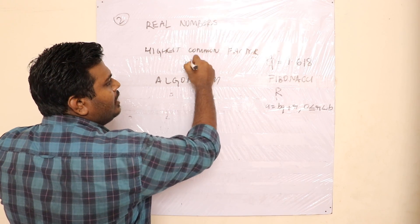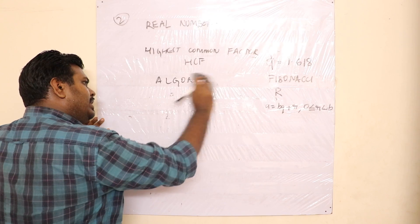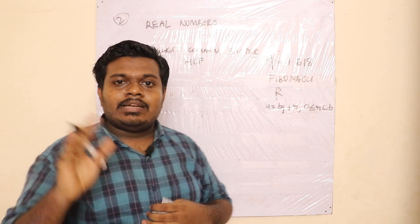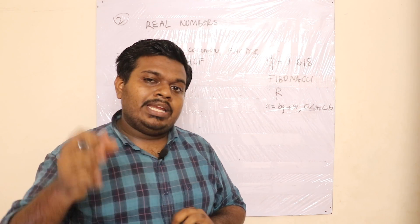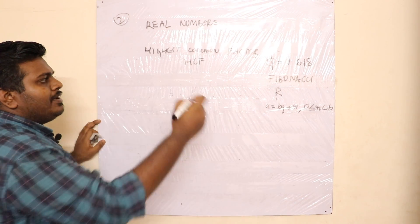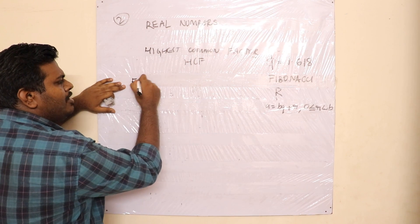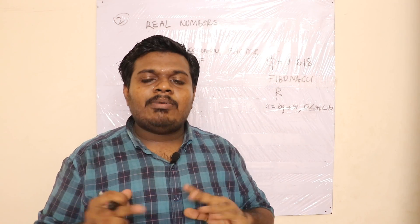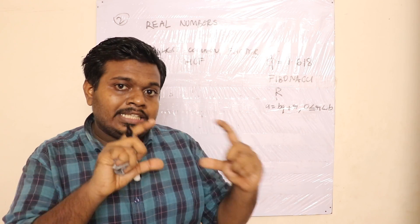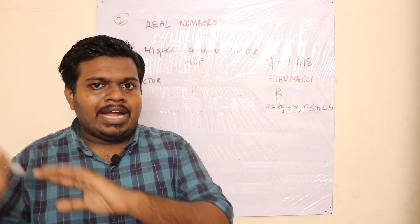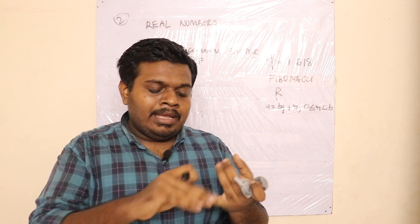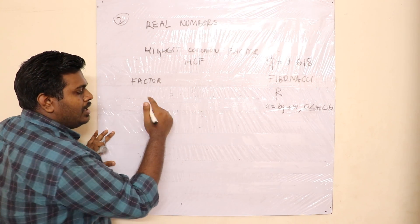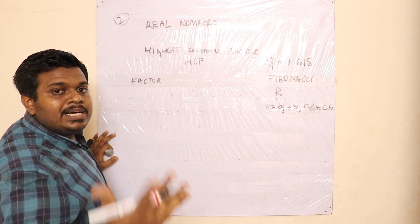We use Euclid's Division Algorithm to find the HCF — Highest Common Factor. What is a factor? A factor is a building block of a number. If you see the factors of a number, you look at all the numbers that divide it exactly.